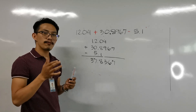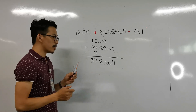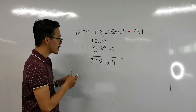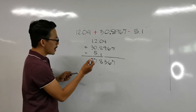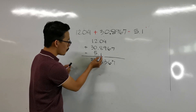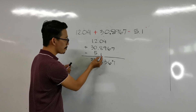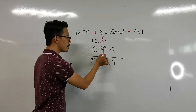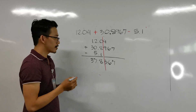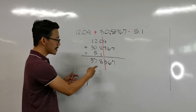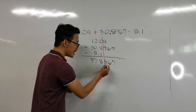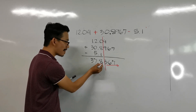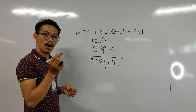Now, how are we going to determine our final answer? For addition and subtraction, take note of the least precise measurement. In this case, our least precise measurement is the 1 in 5.1 — it is the farthest number to the left. So we put a line there. The number aligned with that position is 8, meaning the digits after it are not significant, and our answer must only go up to that 8 — one decimal place.